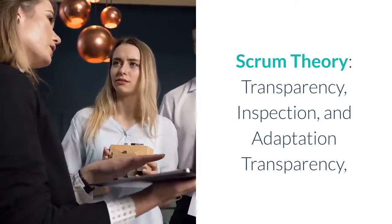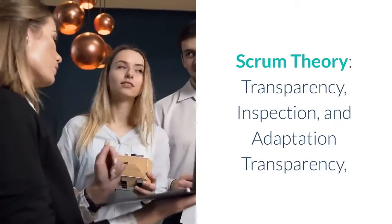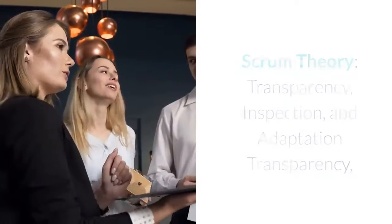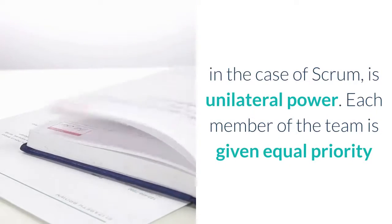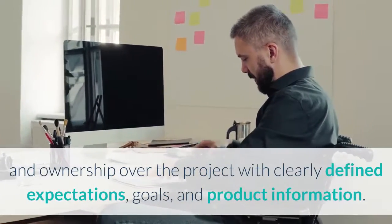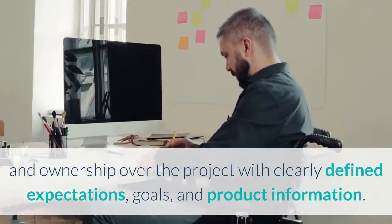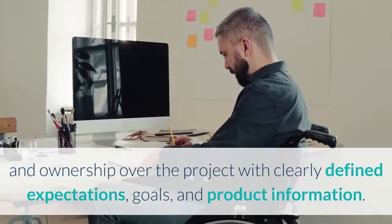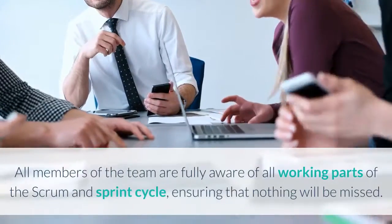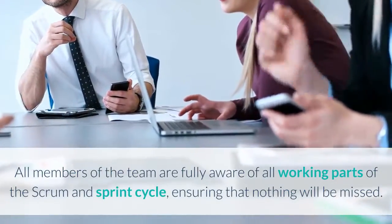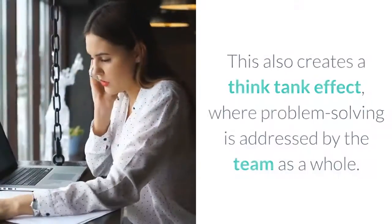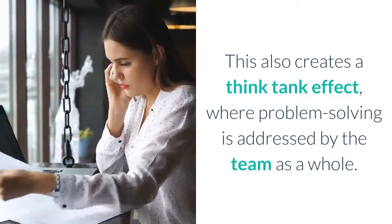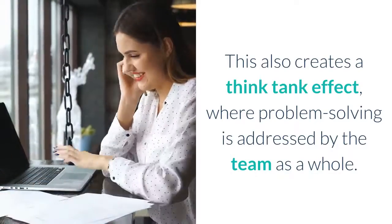Scrum Theory is built on three pillars: transparency, inspection, and adaptation. Transparency, in the case of Scrum, is unilateral power. Each member of the team is given equal priority and ownership over the project with clearly defined expectations, goals, and product information. All members of the team are fully aware of all working parts of the Scrum and sprint cycle, ensuring that nothing will be missed. This also creates a think tank effect, where problem solving is addressed by the team as a whole.